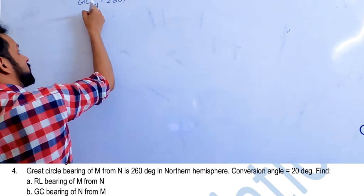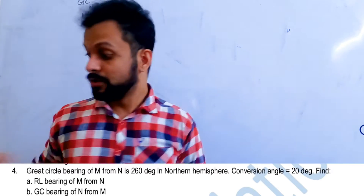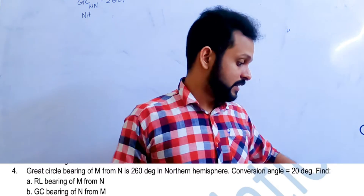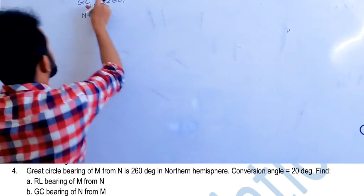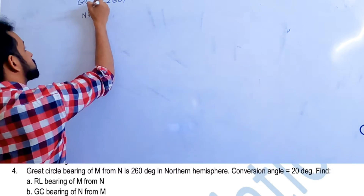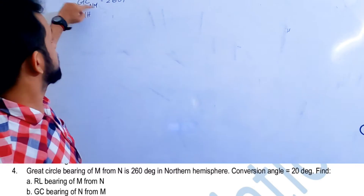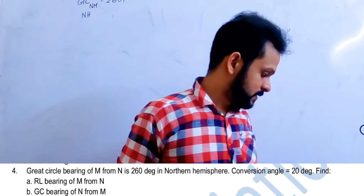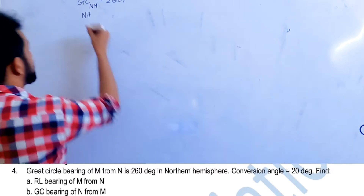The question states that the whole scenario is happening in the northern hemisphere. It is the great circle bearing of M from N, so M from N is NM. This is a simple bearing of M from N, and the conversion angle is minus 20 degrees.